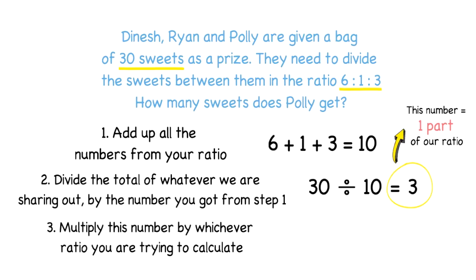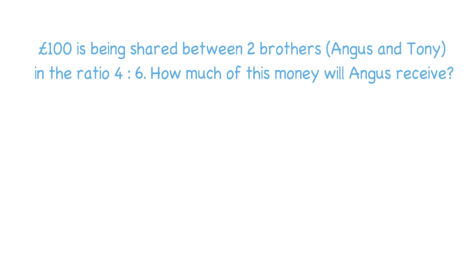Next, you want to multiply this number by whichever ratio you were trying to calculate. We've been asked how many sweets Polly gets. She is the third name in the list, so she corresponds to the third ratio number, which is three. Three times three gives me nine, so Polly will have nine sweets.